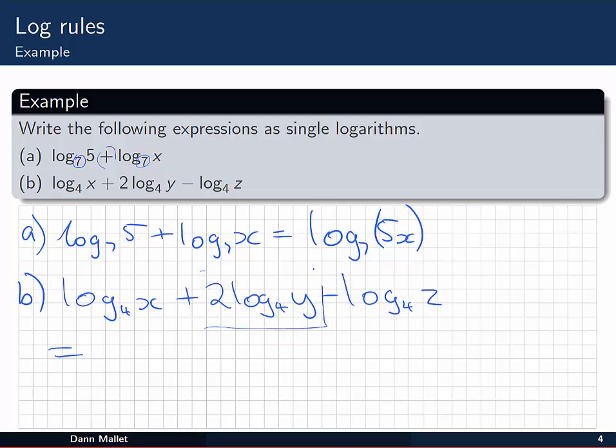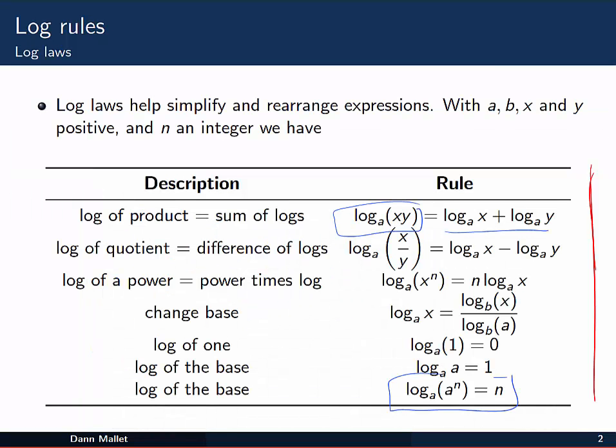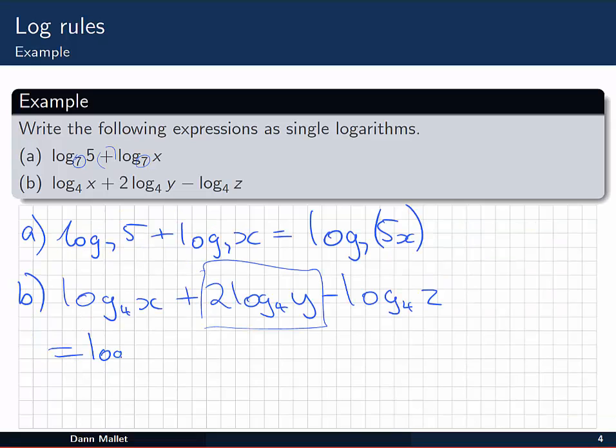The first thing I can do is address this term. 2 multiplied by the log. I need to get that 2 out of the way. So I am going to use the rule where we have a number times a log to bring it in as a power. So I will have log base 4 of x left alone. 2 log base 4 of y becomes log base 4 of y squared. And again we leave the log base 4 of z.